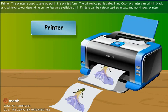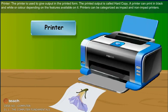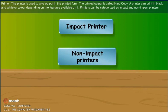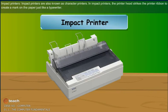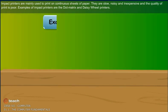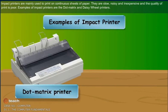Printer: The printer is used to give output in printed form. The printed output is called hard copy. A printer can print in black and white or color depending on the features available on it. Printers can be categorized as impact and non-impact printers. In impact printers, the printer head strikes the printer ribbon to create a mark on the paper, just like a typewriter. Impact printers are mainly used to print on continuous sheets of paper. They are slow, noisy, inexpensive, and the quality of print is poor. Examples of impact printers are the dot matrix and daisy wheel printers.